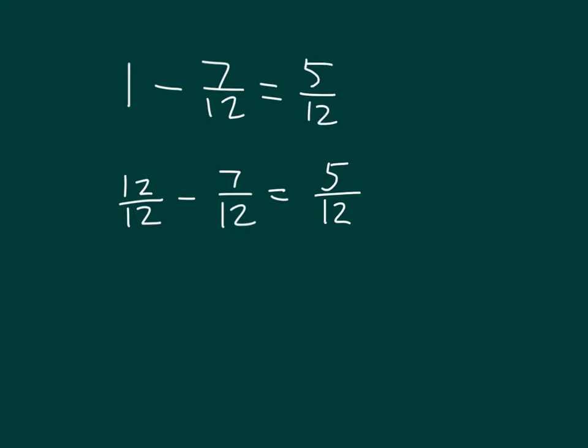If we were to check this work, we would use an addition problem. We would take 5 twelfths, add it together to 7 twelfths, to get 1. Let's see what that looks like on a number line. That is, let's see that to make sure that 5 twelfths plus 7 twelfths does equal 1 whole.